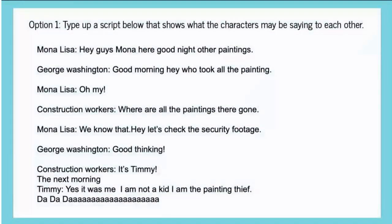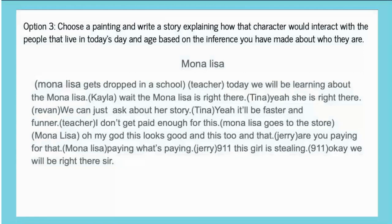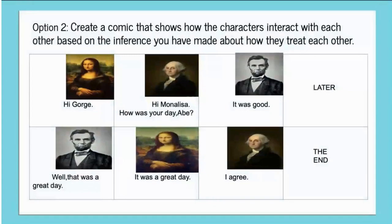This is an example of option one — you can clearly see it's a script. The student has done a great job showing the speaking parts. Obviously there are pieces that are missing, but these are fourth graders and we have to keep our expectations realistic. Another student included a little of both — they chose option three but it's also similar to a script. This is an example of option two — Mona Lisa, George Washington, and Abe Lincoln. They included Abe Lincoln even though he's not in the photos, but George Washington is, and you can clearly see how they're showing the characters interacting and treating each other.